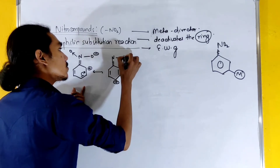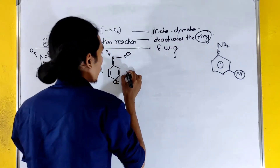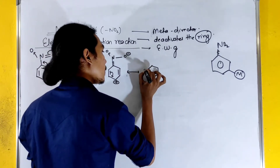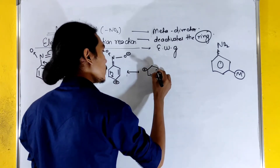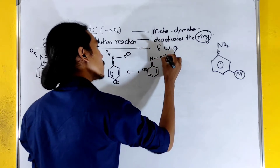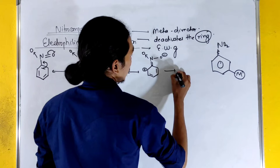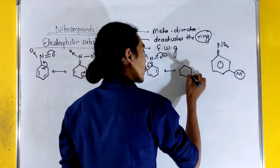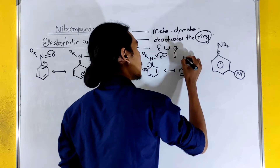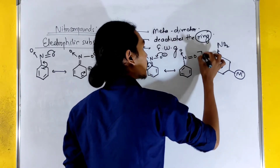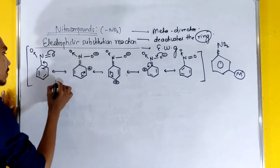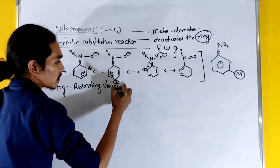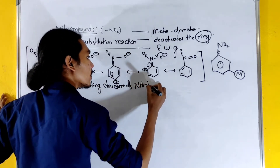There is a double bond on nitrogen, with a positive charge here. This shows the resonating structure of nitrobenzene — double bond, nitrogen, and oxygen are involved in the resonance. This is the resonating structure of nitrobenzene, a simple concept.